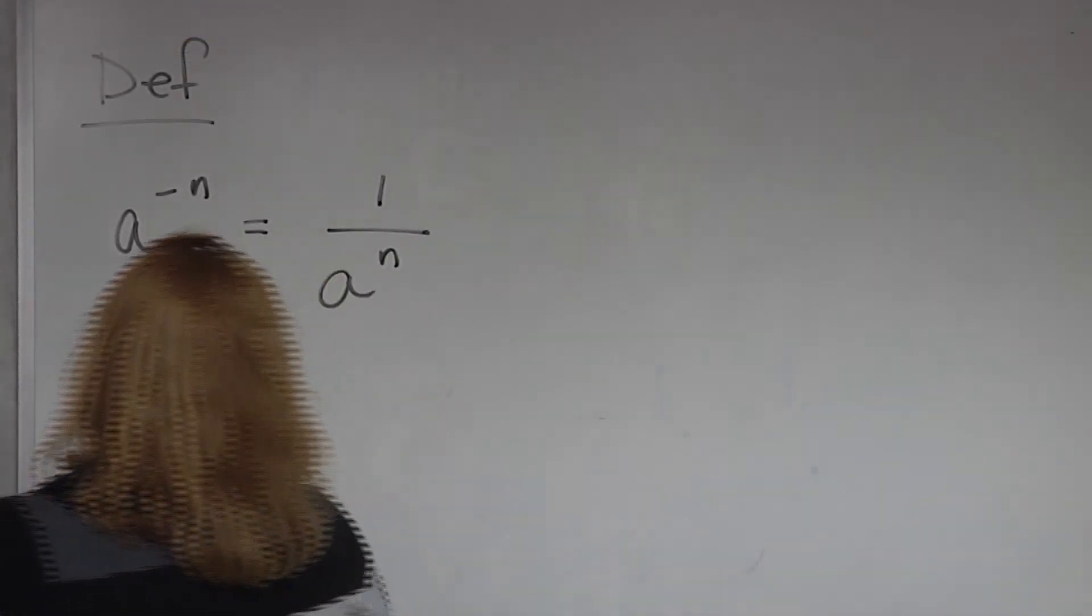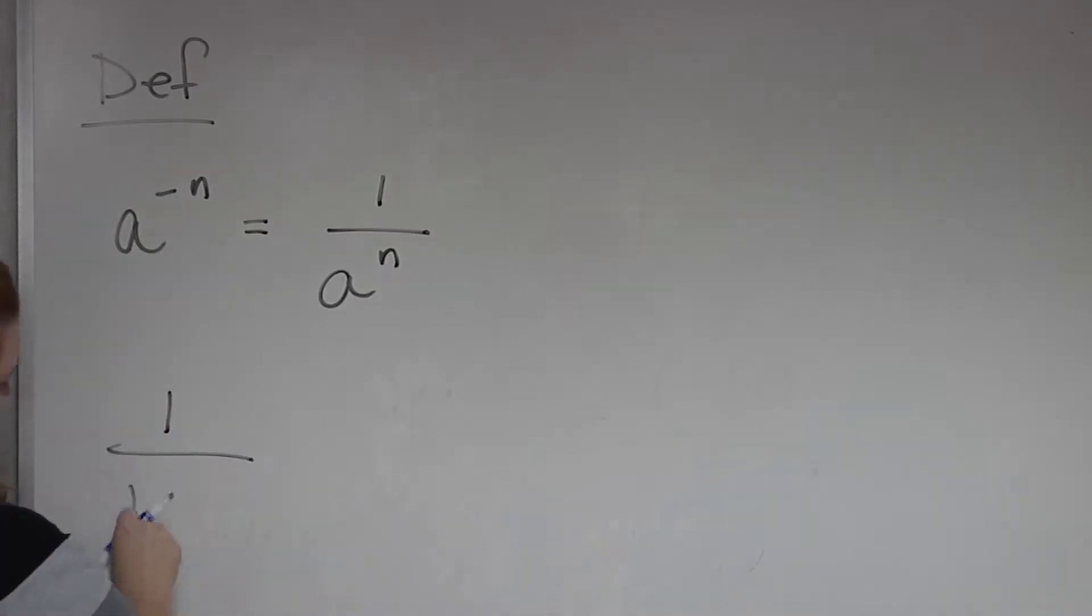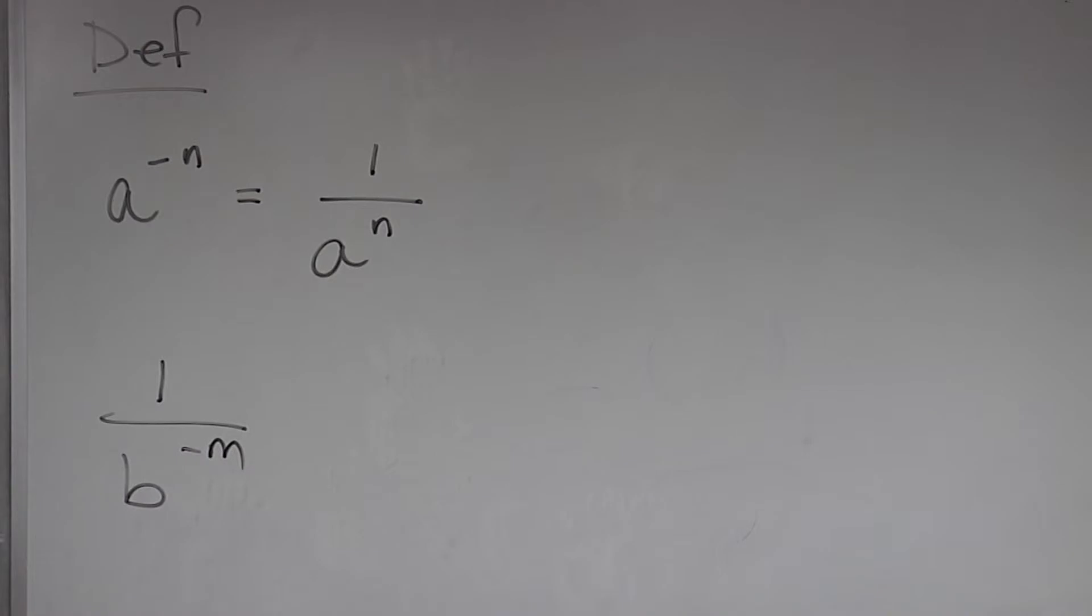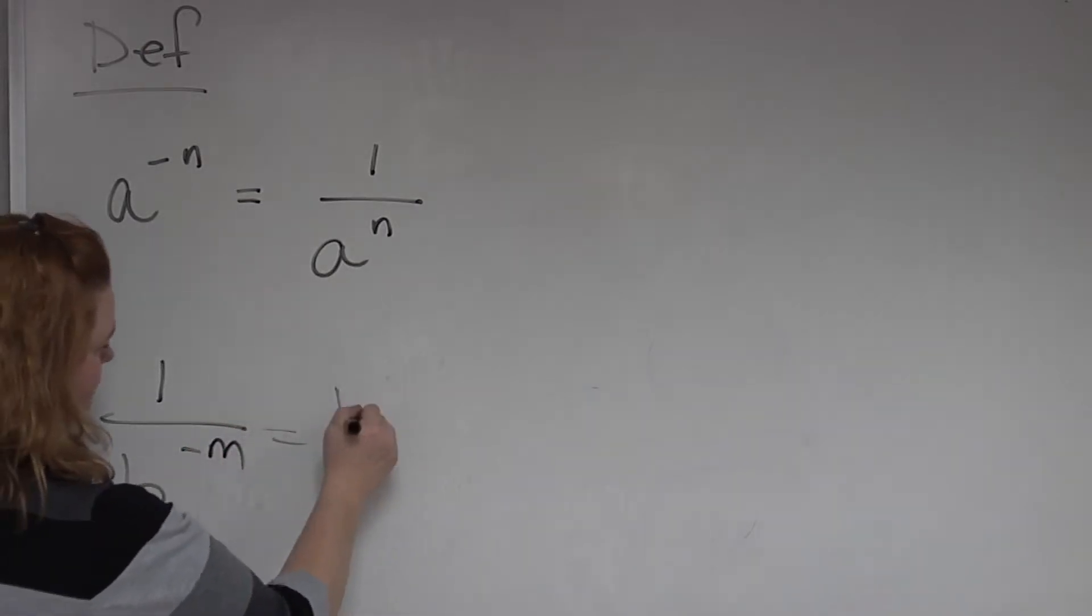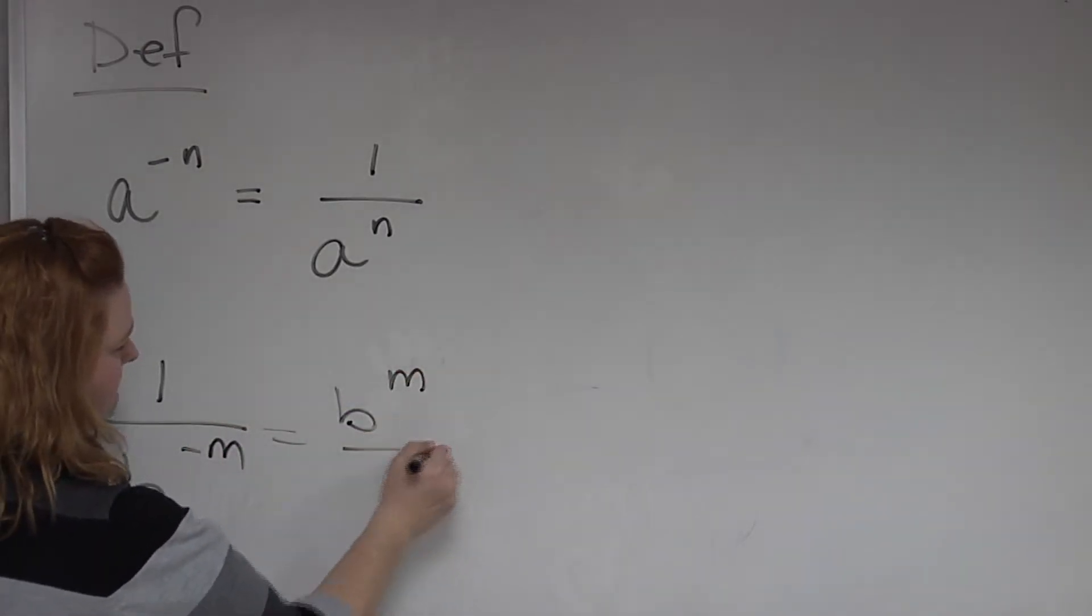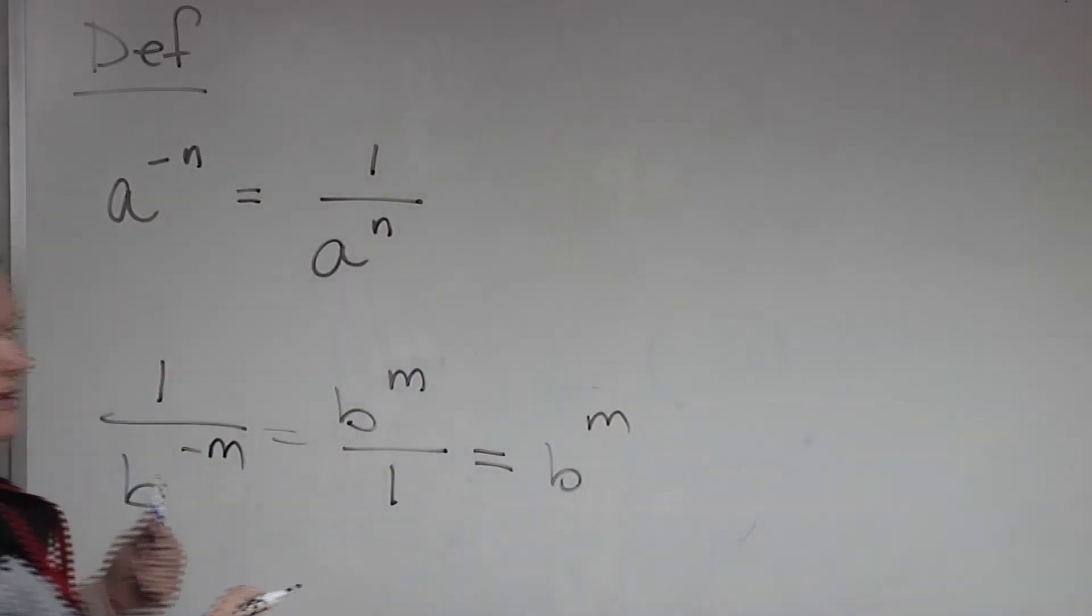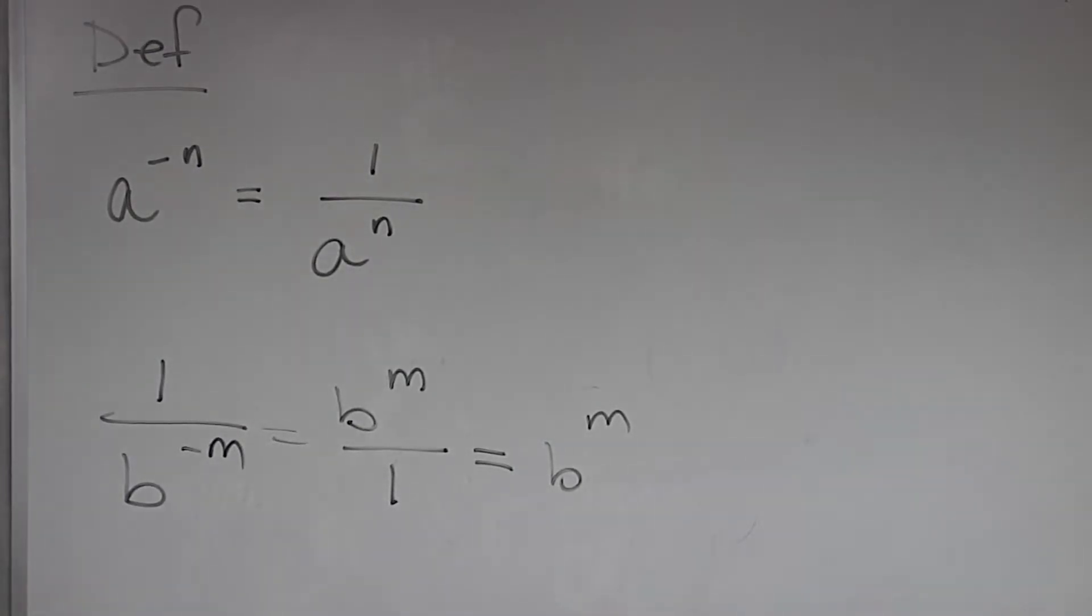What would happen if our negative exponent was in the denominator? d to the m power over. And do we really see a 1 at the denominator? No. What do we see? We see b to the m.